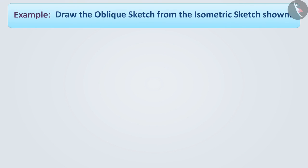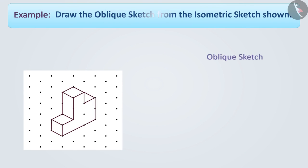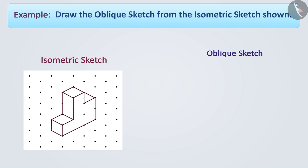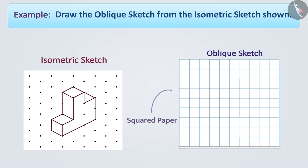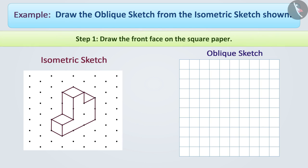Next example: draw the oblique sketch from the isometric sketch shown. We will use square paper to draw oblique pictures. Step 1: First of all, we will draw the front face on the square paper.